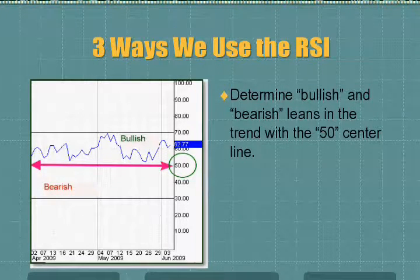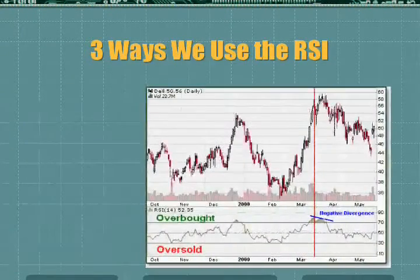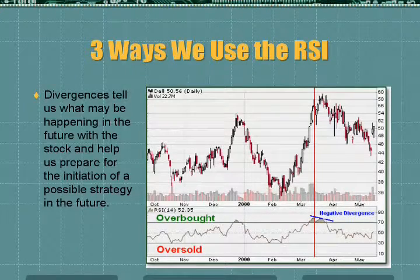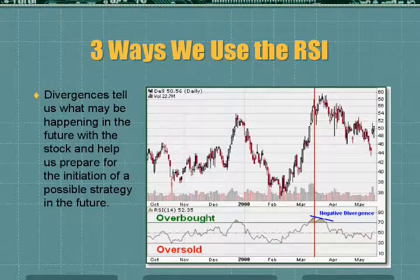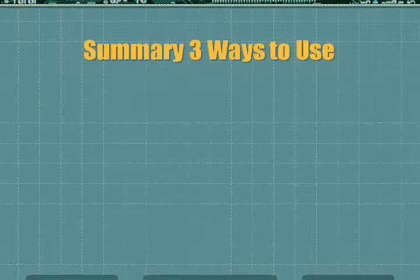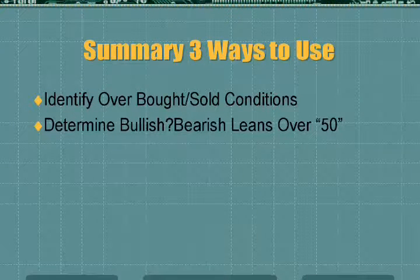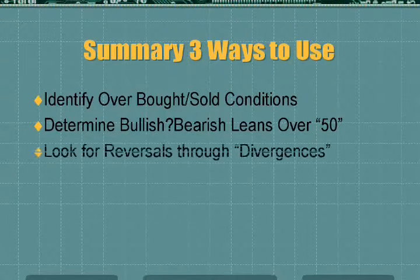As on this one, it is above 50, so it would be more bullish. The third way is through divergences. They tell us what may be happening in the future with the stock and help us prepare for the initiation of a possible strategy. Here we have a negative divergence where it's going up and then gives us that signal that the stock may be going down. Summary: identify overbought and oversold conditions, determine bullish or bearish lean over or under 50, and look for reversals through divergences.